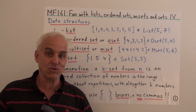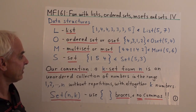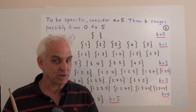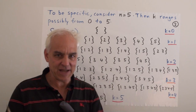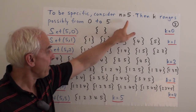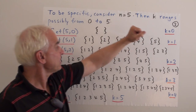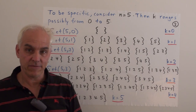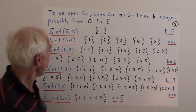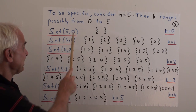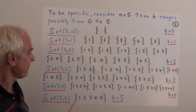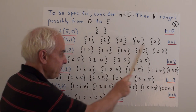Let's look at sets from five, where k ranges from zero to five — those are the only possibilities since repetitions are not allowed. Set(5, 0): zero-sets from five, there's only one — the empty set. When k is one, there are five one-sets: the set {1}, the set {2}, the set {3}, the set {4}, and the set {5}.